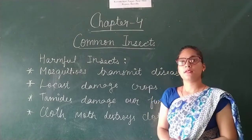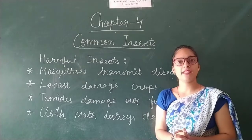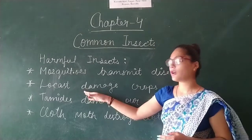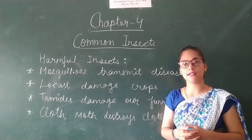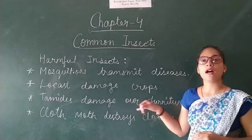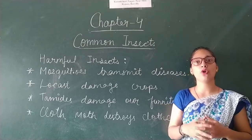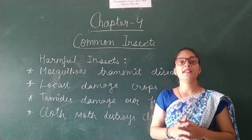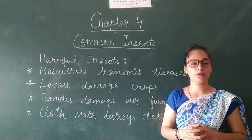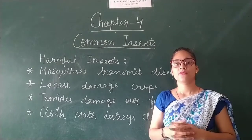Now let's talk about some harmful insects. Some insects such as mosquitoes are very harmful because they transmit diseases. Some insects like locusts damage our crops and gardens. Some insects like termites damage our furniture. Some insects like clothes moths destroy our clothes by making holes in them. Bees and wasps sting humans and animals, and a bee sting is very painful.